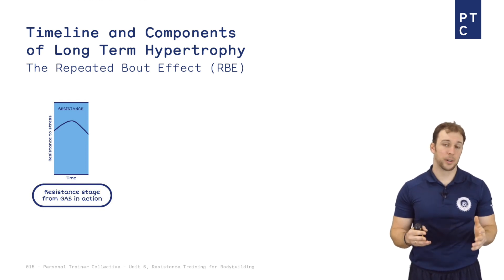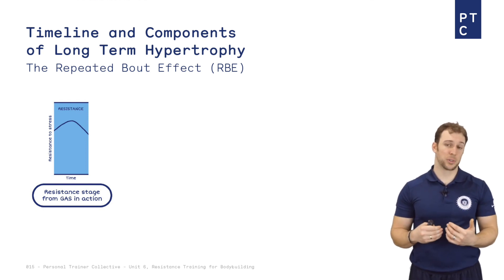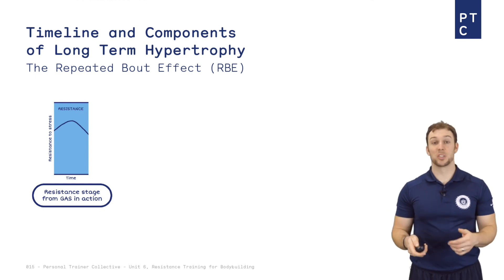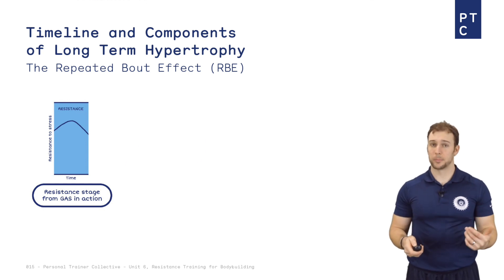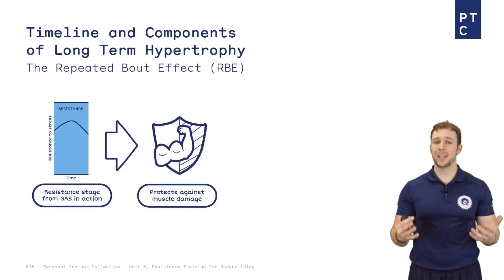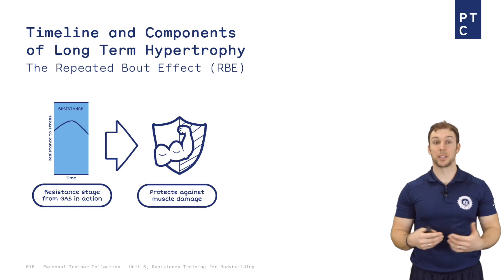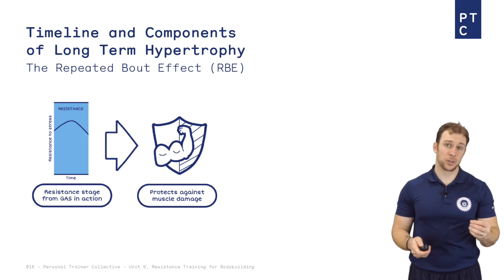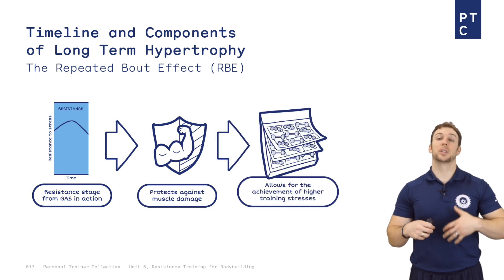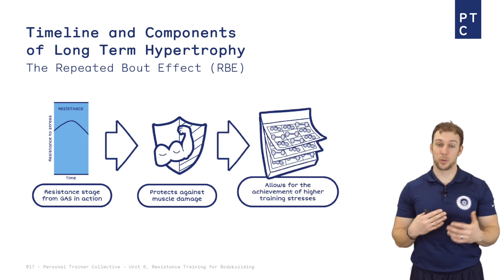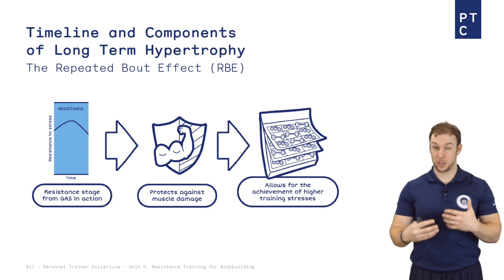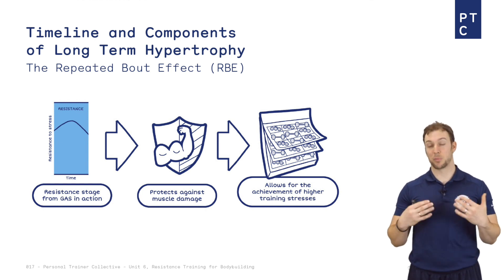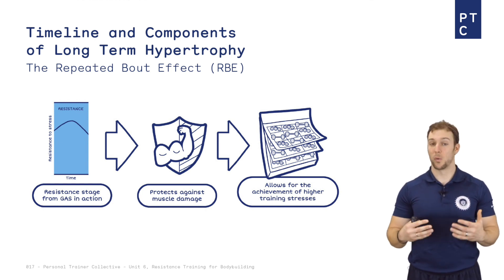However, as you perform the same level of volume or intensity over time, the muscle damage response will be lower and lower. More or less, the repeated bout effect shields you against future muscle damage, and that in turn allows you to continue to increase the training load and training volume so that you can achieve progressive overload over time.